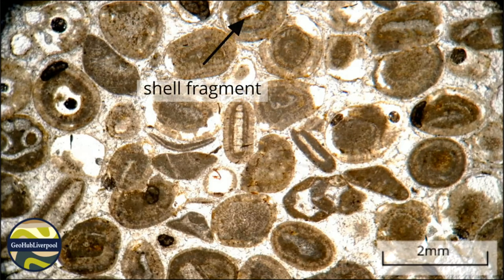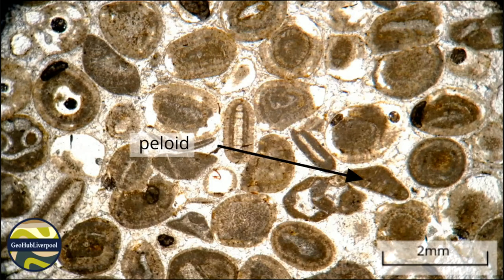Some ooids show concentric layers of micrite around a nucleus of paler material, which may well be a shell fragment. Peloids are more irregular or elongated; they are pellets of micrite and most of them don't show any concentric layering.